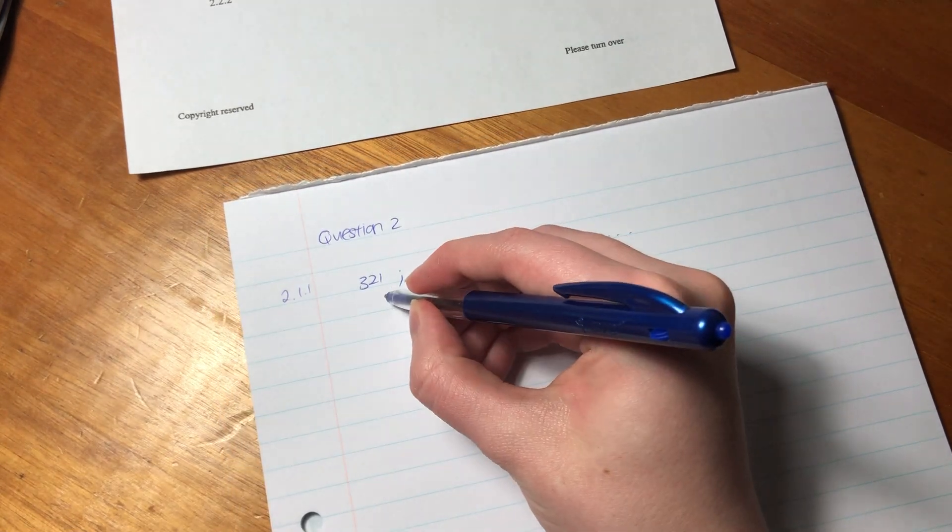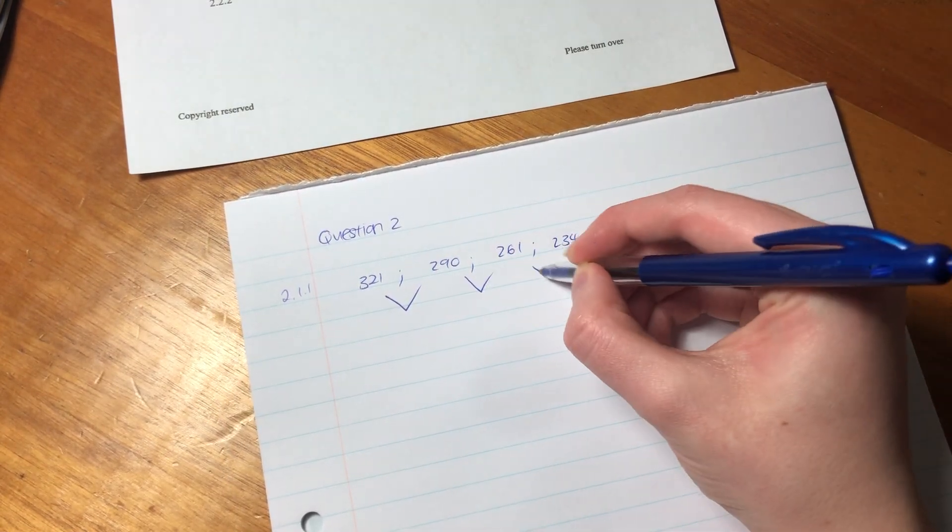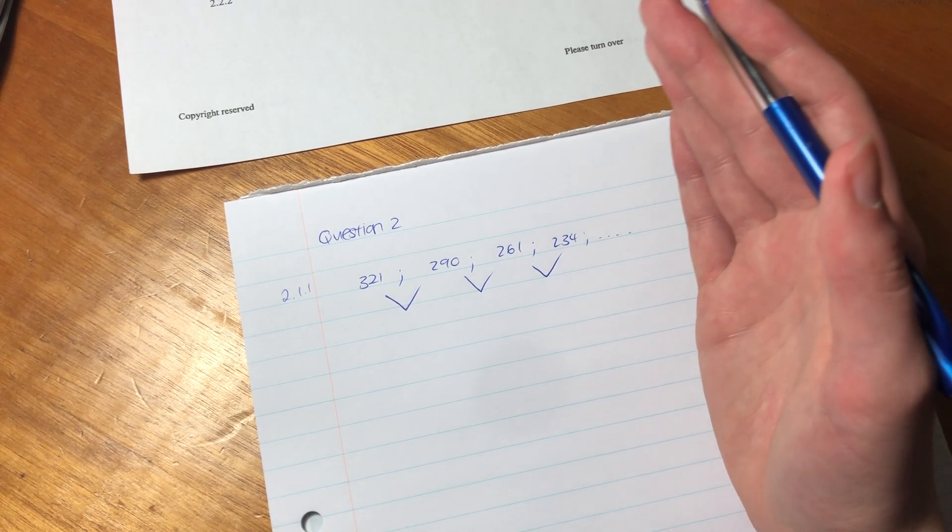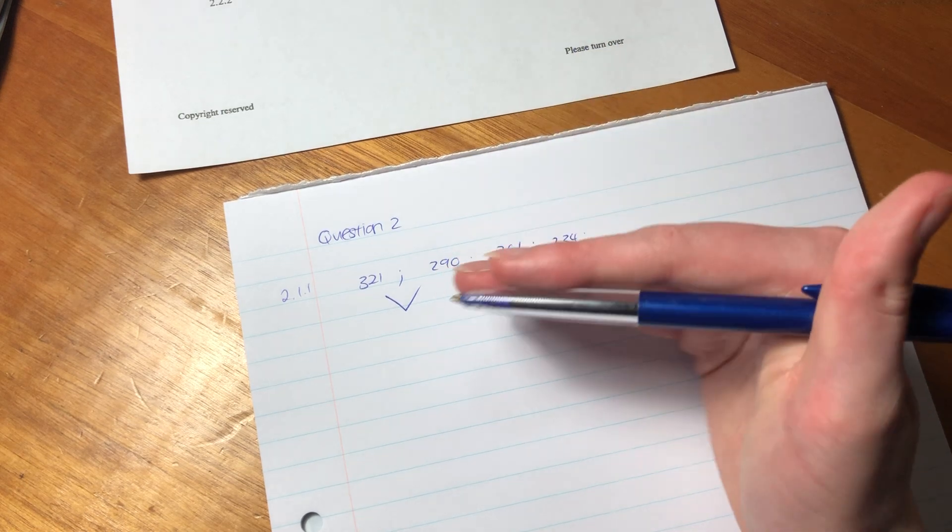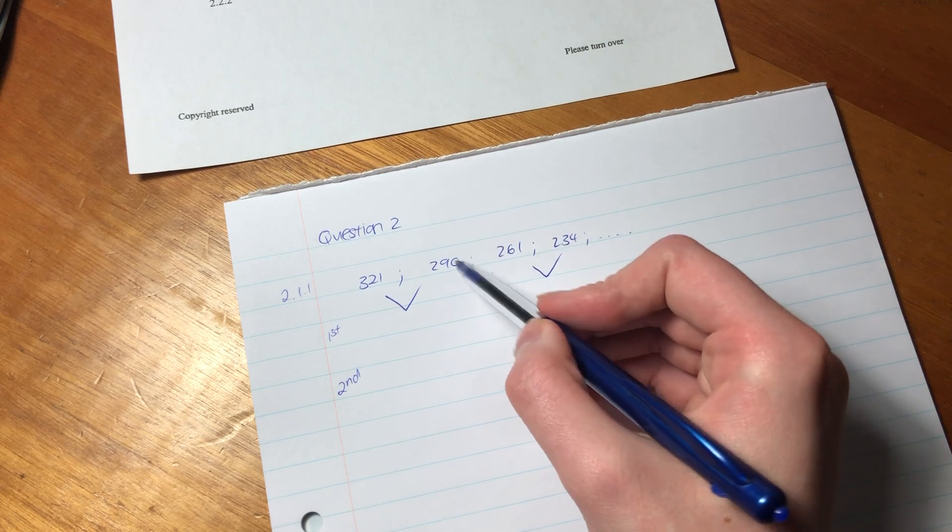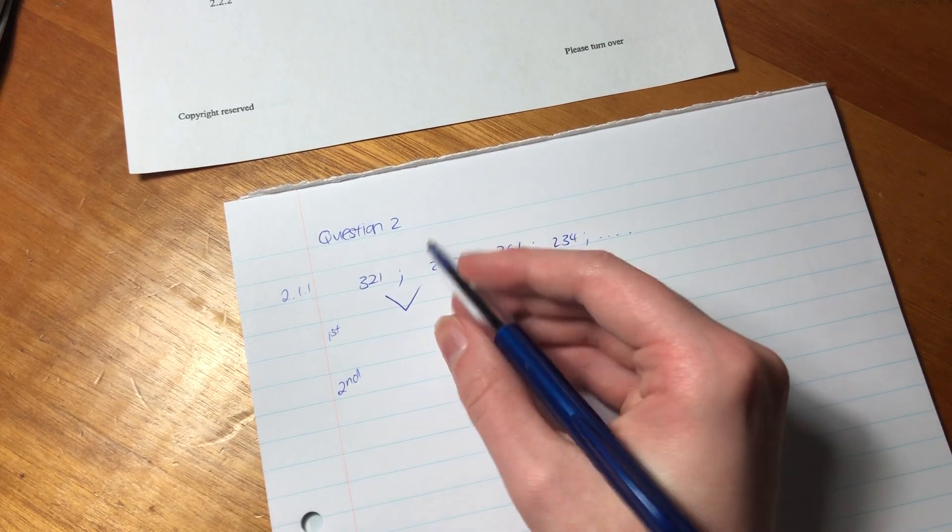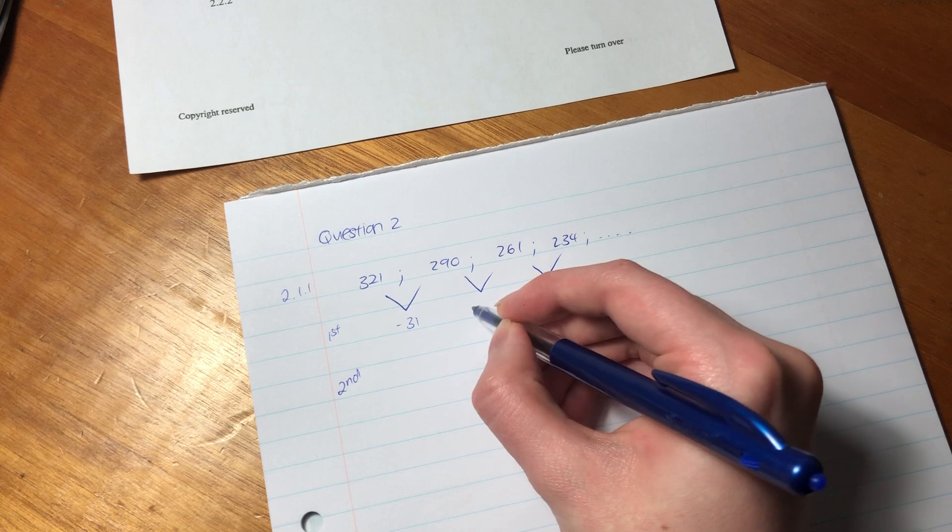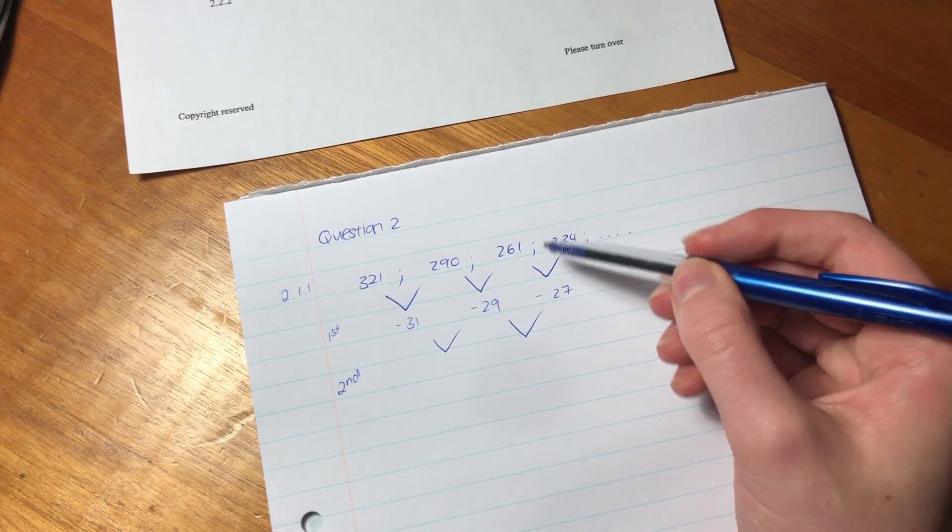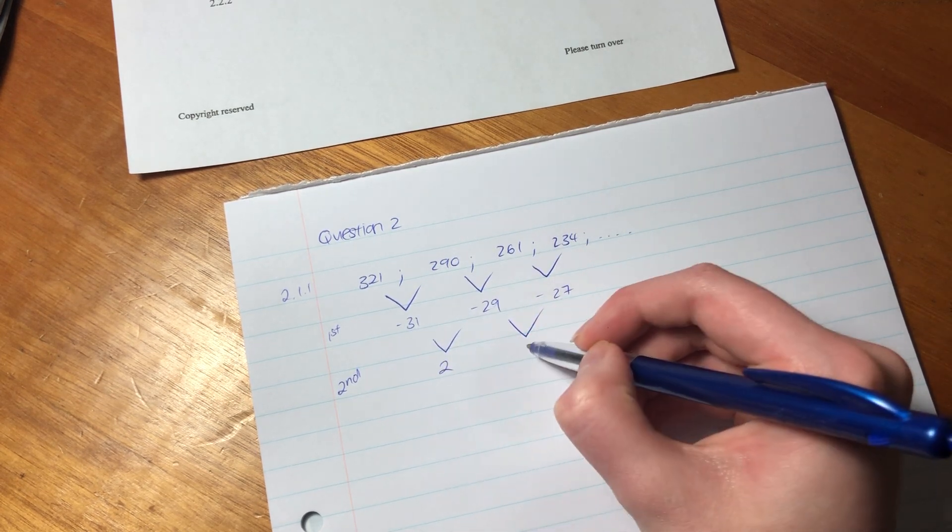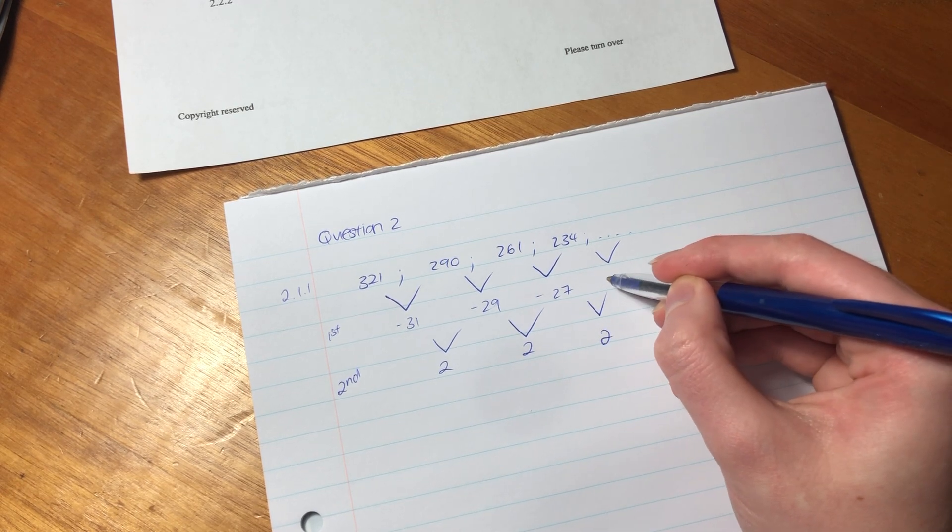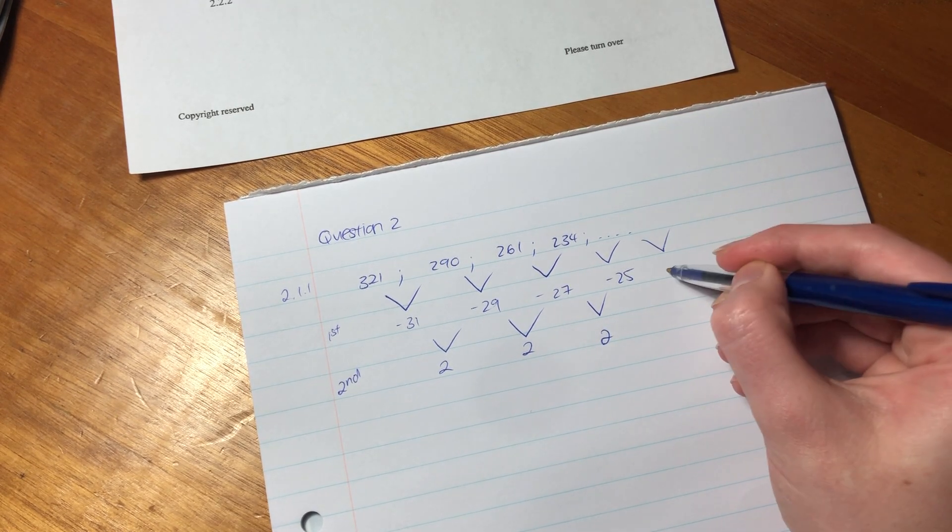Okay, so let's look at the difference. Now, you might be saying, well, Marks, how do I know how to do the difference? When we do quadratic sequences, it always has a constant second difference. So, you must always work out the first difference and then the second difference afterwards. So, the difference, you always say the latter term minus the previous term.